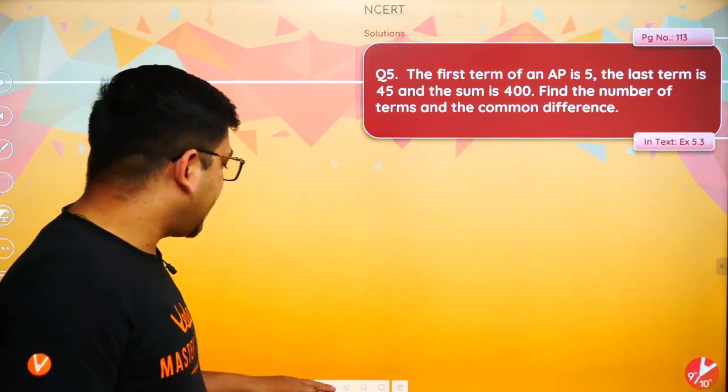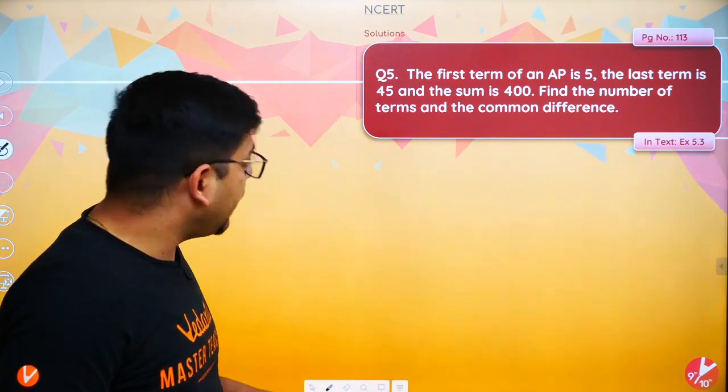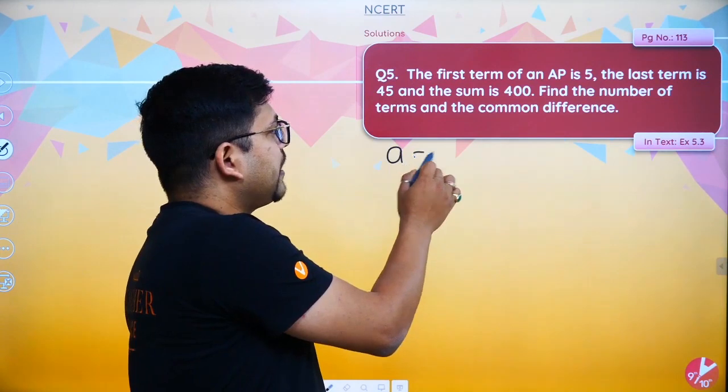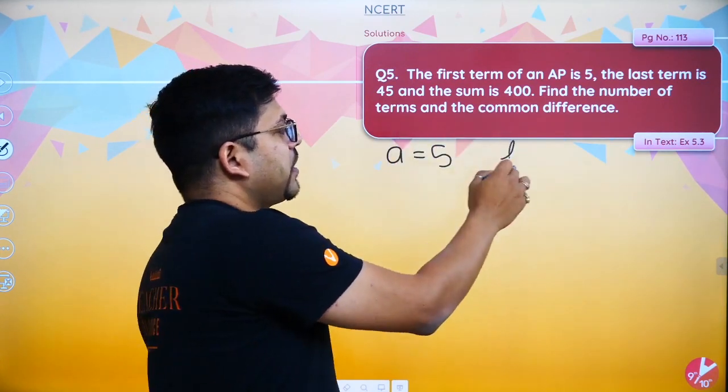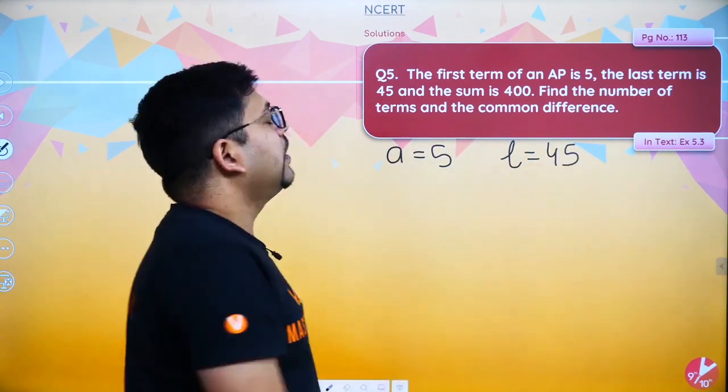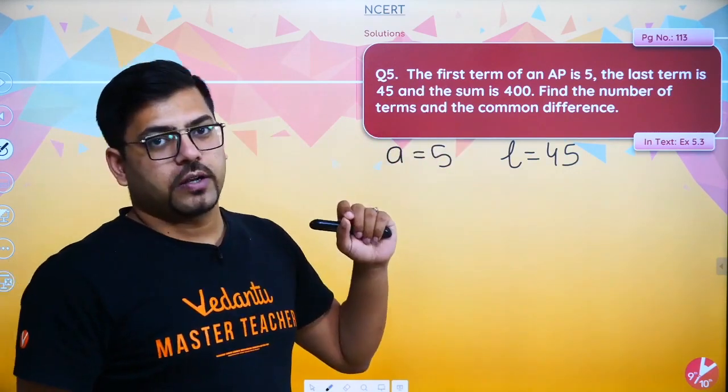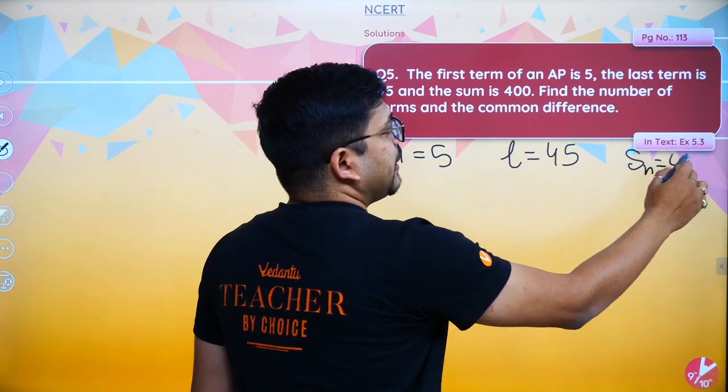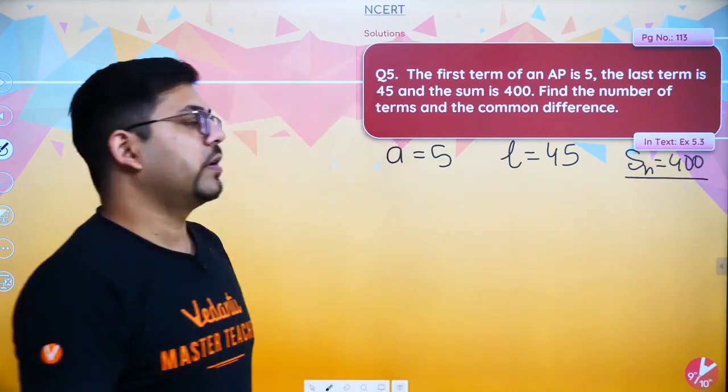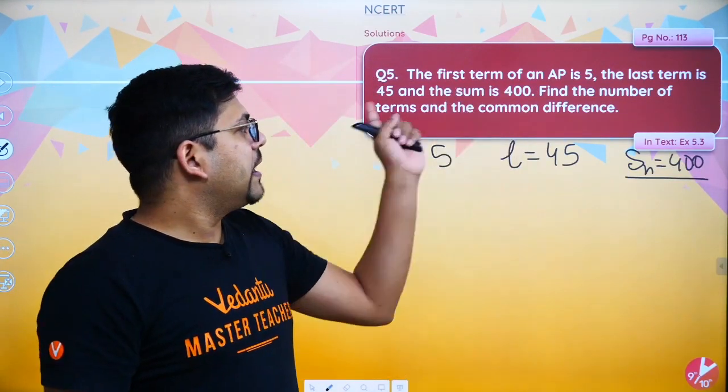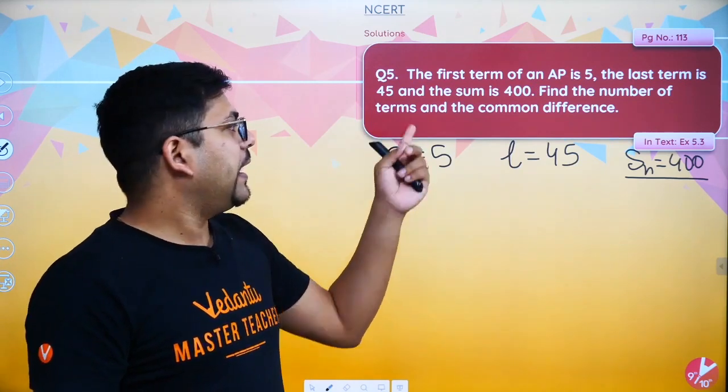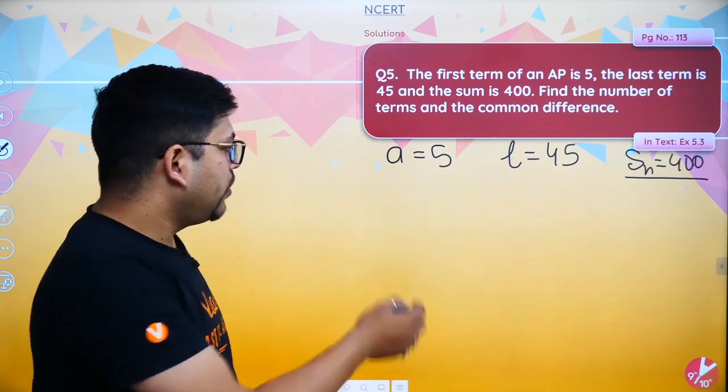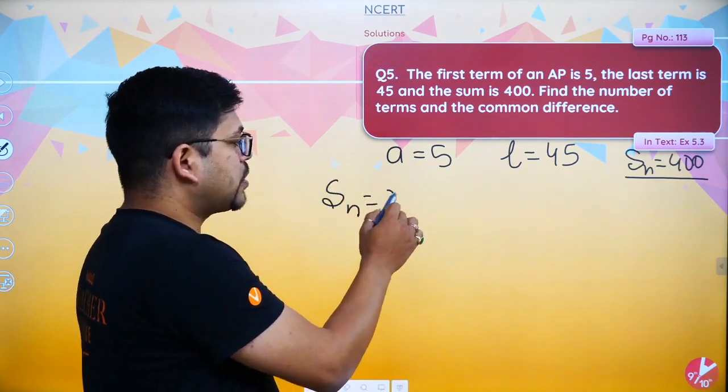Question number 5 says that the first term of an AP is 5, meaning A value is 5. The last term is 45, meaning L value is 45, and the sum is 400. Sum of N terms. Now the sum has been given as 400. Find the number of terms. Obviously N we have to find, and the common difference. To find N, the formula is SN is equal to N by 2.